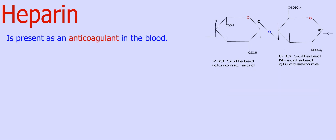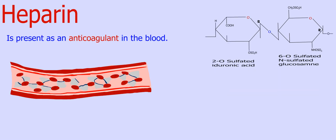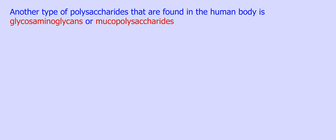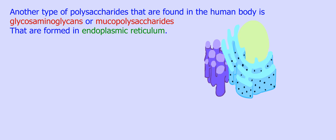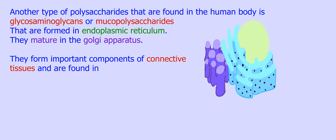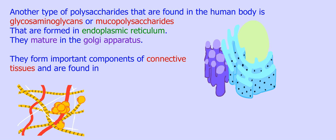Heparin is present as an anticoagulant in the blood. Another type of polysaccharides found in the human body is glycosaminoglycans, or mucopolysaccharides, that are formed by the endoplasmic reticulum. These mature in the Golgi apparatus and form important components of connective tissues, found in collagen and elastin.